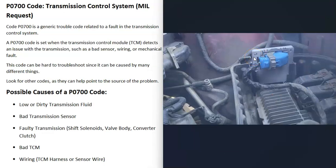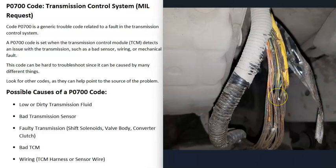These modules also need a good ground, or that can throw them off. If you have a jumper wire, you can jump from the module case to ground to see if that solves the problem. Checking the wiring harness can be more difficult, but make sure all connections look good and are fully plugged in. Walk around and inspect the harness for any physical damage — burn spots, or signs that a rodent chewed through the wires are obvious things to look for.